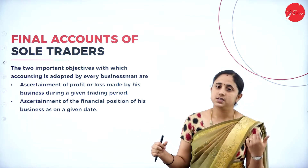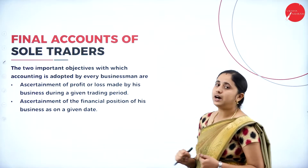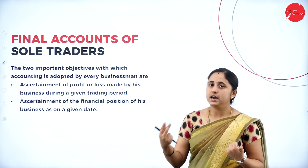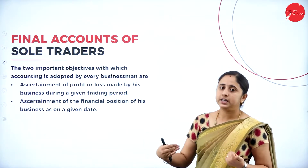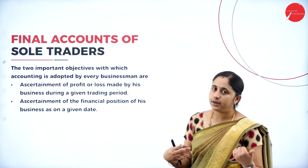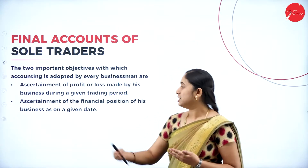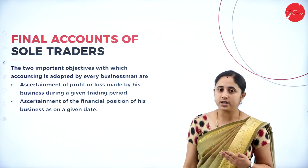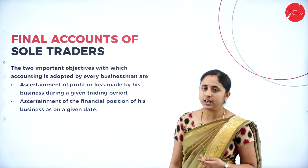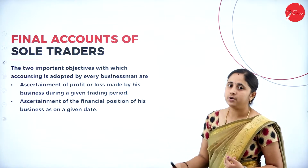The final accounts — that is, the trading and profit and loss account and balance sheet — fulfill the objectives of accounting. They show the profit or loss earned by the company and the financial position of the concern. The trading and profit and loss account gives the net profit and gross profit, while the balance sheet shows the financial position.